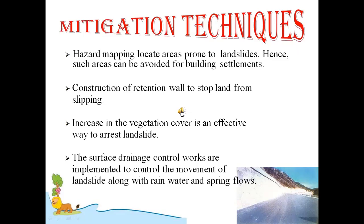Construction of retention walls helps to stop land from slipping. If you have visited any hilly region, you would have seen retention walls built against the mountain slope, or iron wedges placed into the hillside in areas prone to landslides, to prevent stones from falling onto the road. Increasing vegetation cover is also an effective way to arrest landslides. The roots of plants hold the land firmly and will not allow it to flow with flowing water — the rocks are held in place by the vegetation roots.